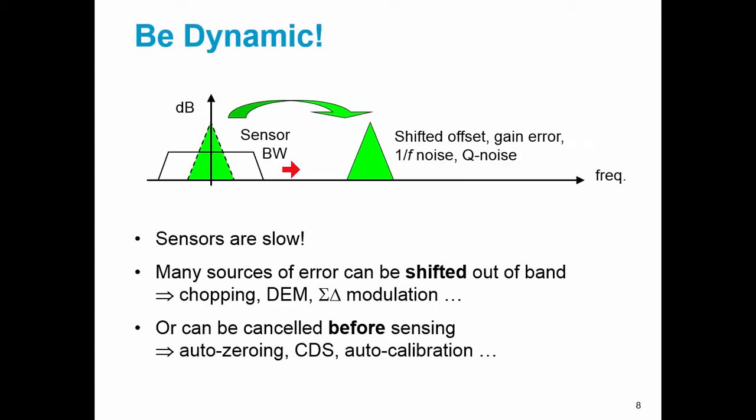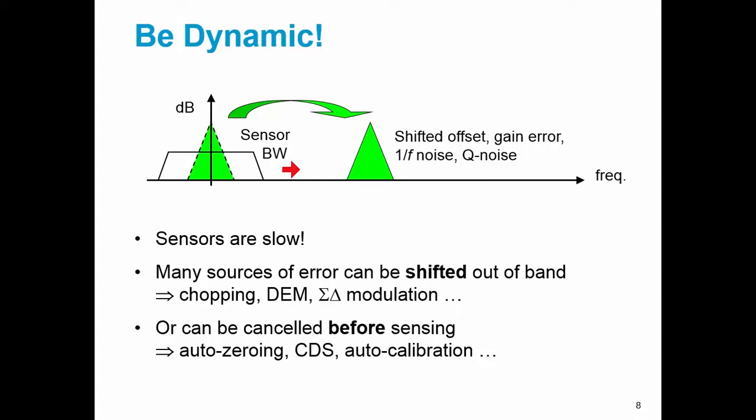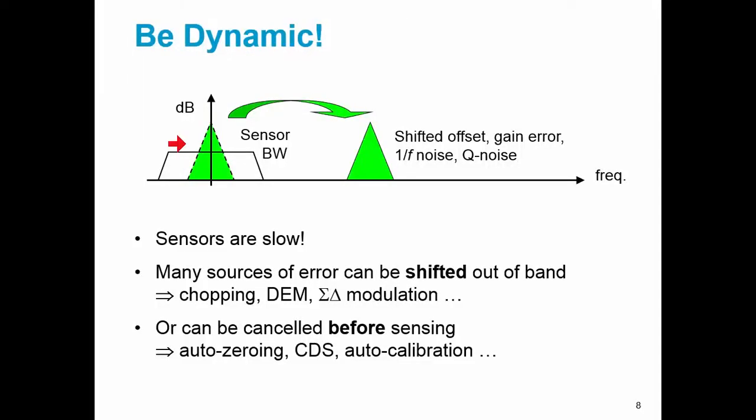The last maxim is being dynamic. Sensors are slow, just like the real-world signals they are trying to transduce. And many times, because transistors are fast, errors can be shifted out of band. So if you look at this cartoon over here, what I'm showing is how low-frequency noise, in this case 1 over F noise, can be modulated outside the bandwidth of interest, where it can be removed by a simple low-pass filter. And techniques which fall into this category are techniques like chopping, dynamic element matching, and delta-sigma modulation. What they are all doing is they are shifting sources of error into higher frequencies where they can be removed by filter, usually a digital filter.